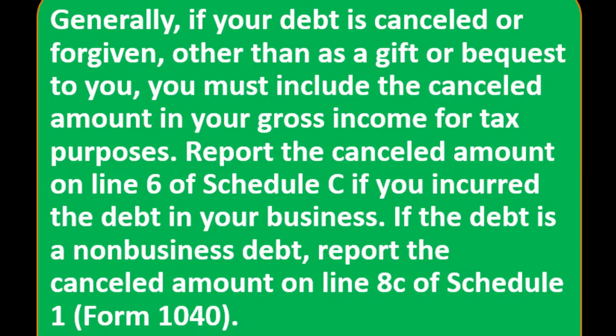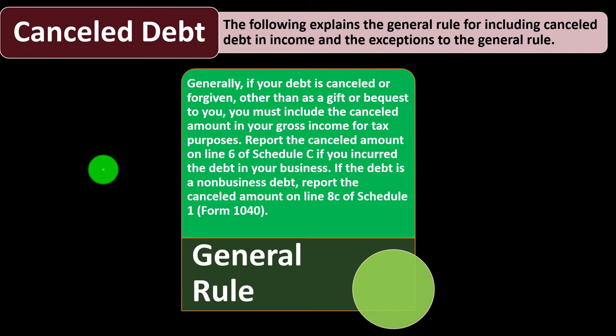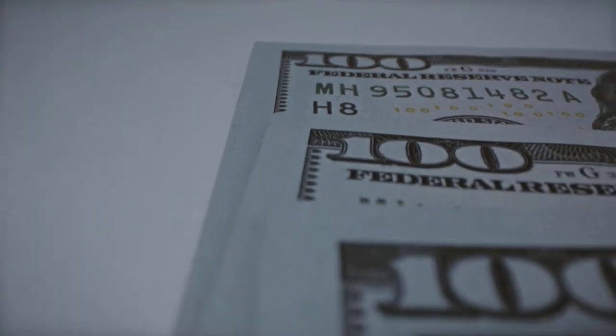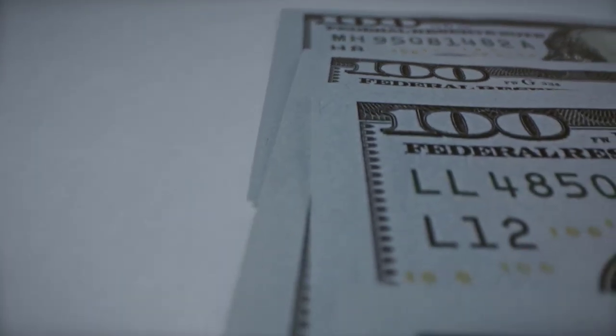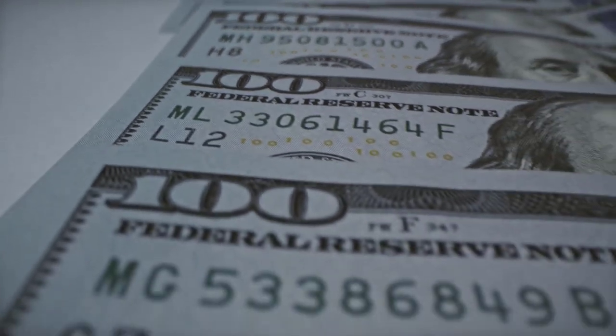Report the canceled amount on line six of Schedule C if you incurred the debt in your business. If the debt is non-business debt, report the canceled amount on line 8C of Schedule 1. Cancellation of debt would be income one way or another — if it was business debt, generally it would be on Schedule C; if it was non-business debt that was canceled, you report it on Schedule 1.